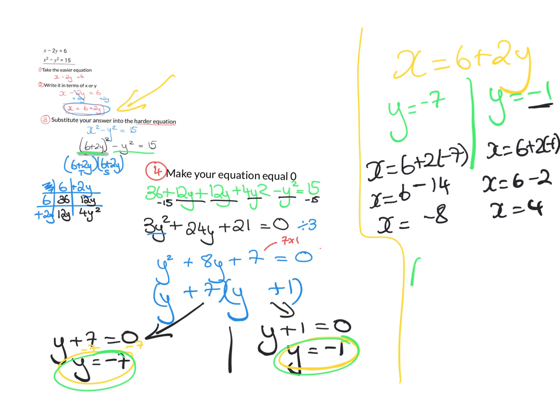So then we write our answers, and we always do them in brackets. And we always do the x value first, and then the y. So if x was minus 8, then y would be minus 7. And if x was 4, y would be minus 1. And that's it there.